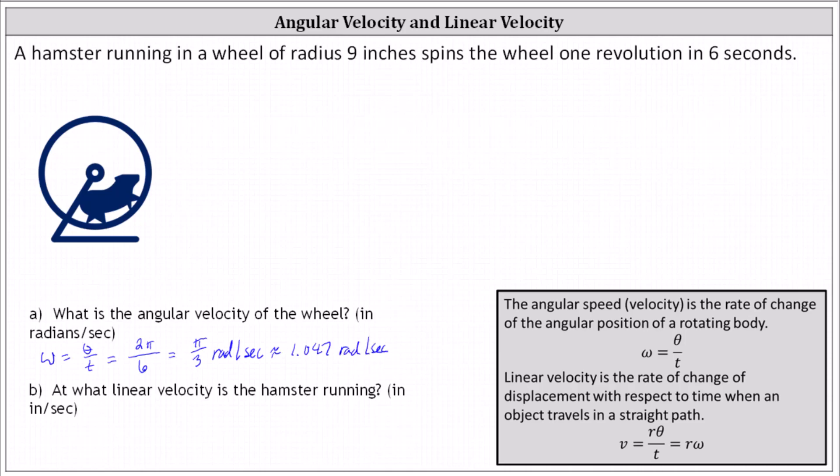Part B: At what linear velocity is the hamster running? The linear velocity is the rate of change of displacement with respect to time when an object travels in a straight line.